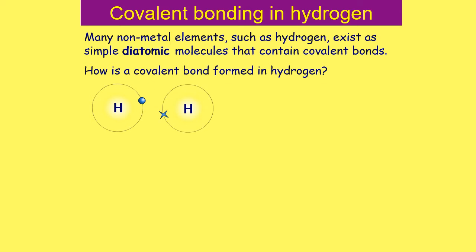Covalent bonding in hydrogen: many non-metal elements such as hydrogen exist as simple diatomic molecules. Diatomic means two atoms — 'di' means two, 'atomic' means atoms. So a diatomic molecule is a molecule made of only two atoms, and hydrogen is one of these, bonded by a covalent bond. How is this bond formed in hydrogen?